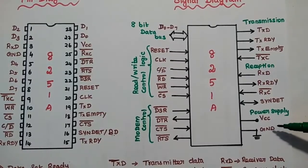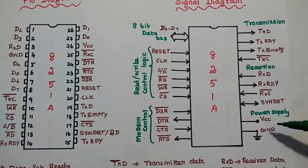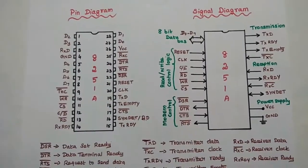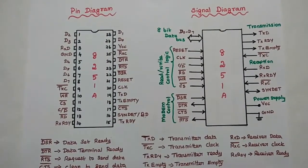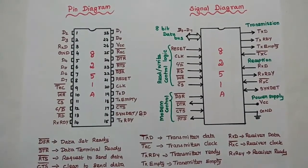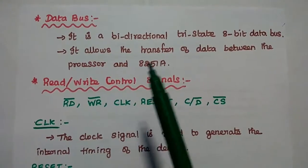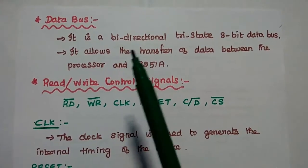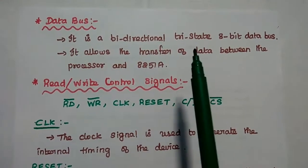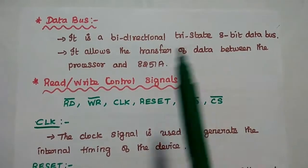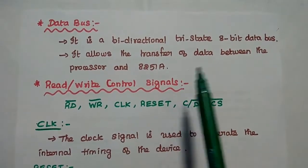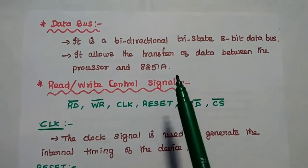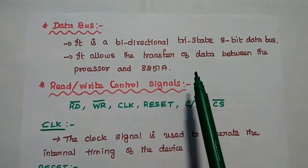The power supply signals are VCC for power supply and one for ground. This is the pin diagram and signal diagram of this USART controller. Let's now discuss each pin in detail. First, the data bus is a bidirectional tri-state 8-bit data bus that allows transfer of data between the processor and the USART 8251A.